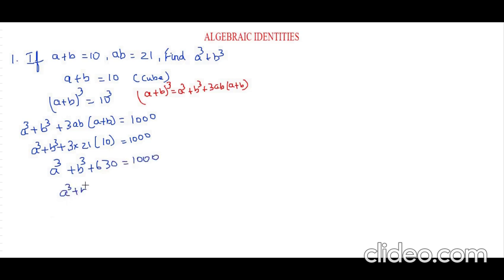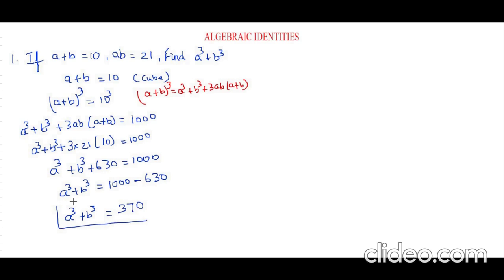So, a cube plus b cube equals 1000, and since 630 from the left hand side is coming to the right hand side, the plus becomes minus 630. Therefore, a cube plus b cube equals 1000 minus 630, which is 370. This is the answer to our question — find a cube plus b cube. Isn't it easy? We just need to apply the identity.